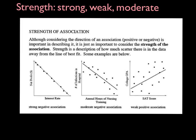The next thing we're going to describe with scatter plots is something called the strength. Basically, you're trying to describe how strong of a relationship the two sets of data have. Do they have a really strong relationship? That would be strong. Are they weak or moderate? If you look at this first graph, the points fall really close to that line of best fit — almost every single point is on it. This would be called a strong association. It's also negative because it's going down.